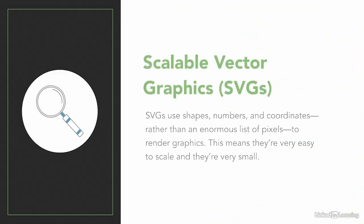You may have also heard about a different file type called a Scalable Vector Graphic, or an SVG. SVGs use shapes, numbers, and coordinates rather than a giant list of pixels to render graphics. This means they're very easy to scale and they're very small. Generally speaking, simple illustrations will work well in SVG or PNG formats. So if you want to experiment with SVGs and you have a graphic editor program like Photoshop, go ahead and export your logo as an SVG. If you like creating them and they're efficient for you, go ahead and keep using them — just make sure that a PNG isn't smaller. In my case, the SVG file of my logo was about 50% bigger than the PNG file, so I'm going to stick with that PNG file.